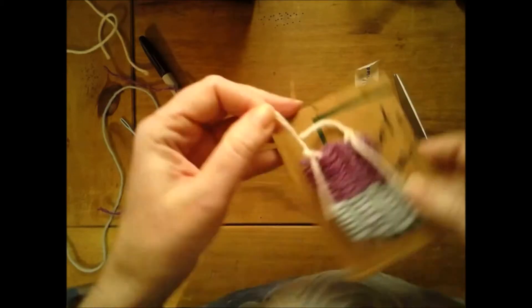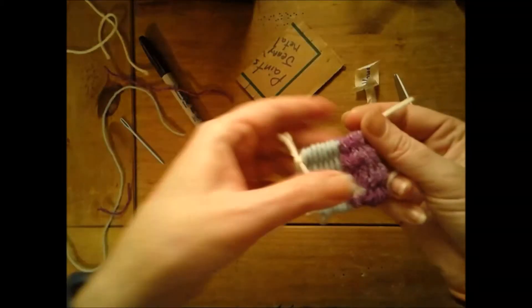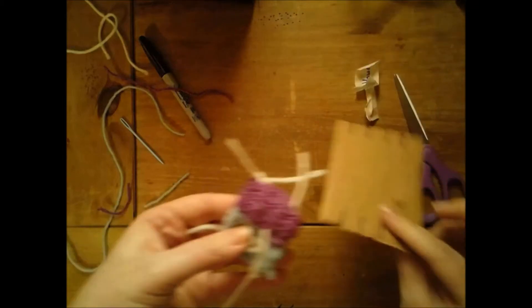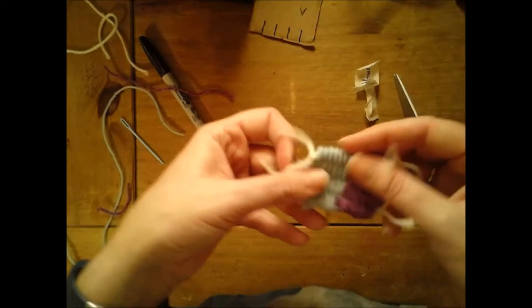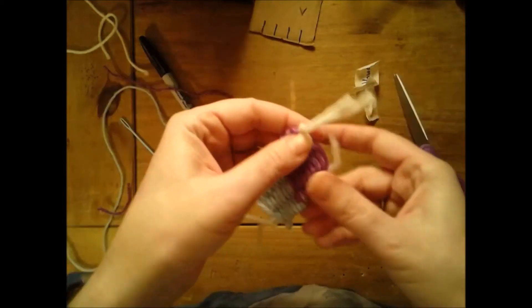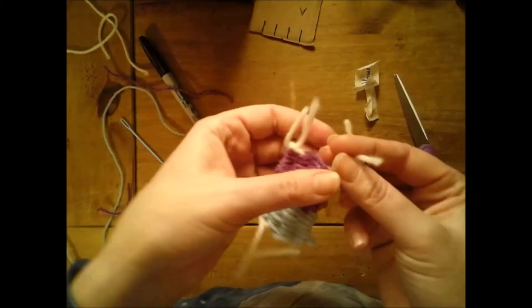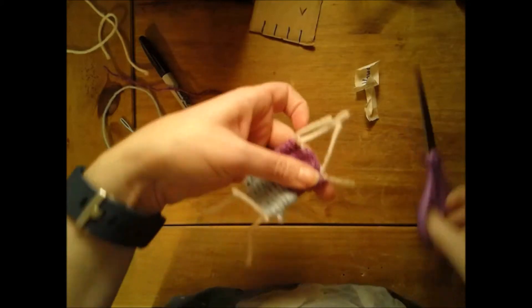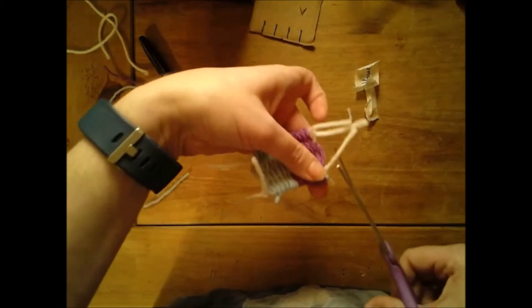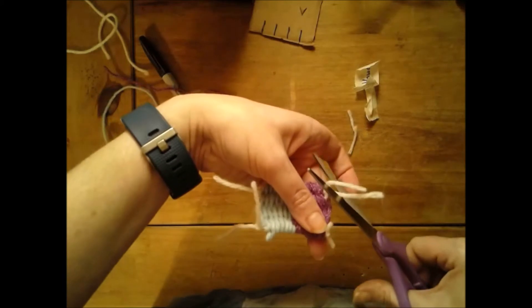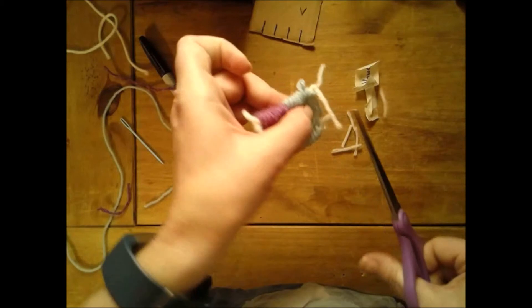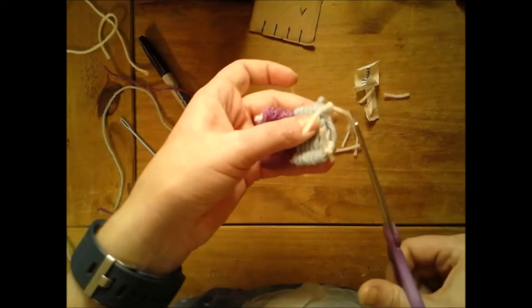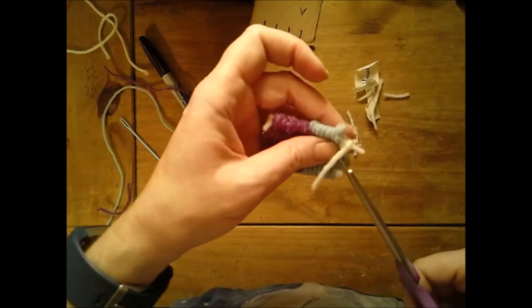Now I have my weaving off. This piece of cardboard can go back into the fiber art center because we can use it again to make another weaving. If you don't like these strings hanging off of it, you can always take your scissors and cut them off. You don't have to; it's a personal preference whether you like that or not.